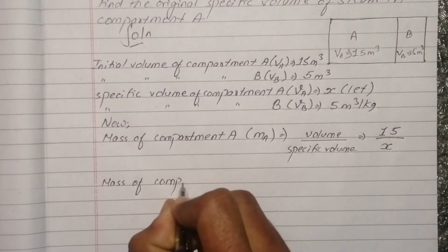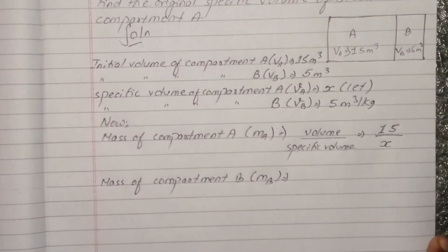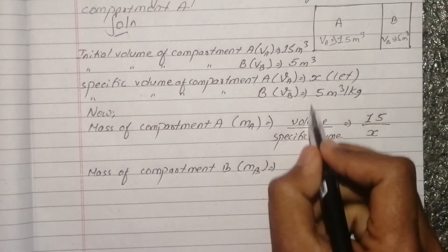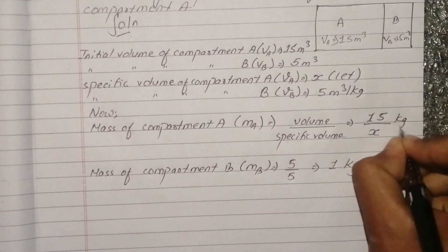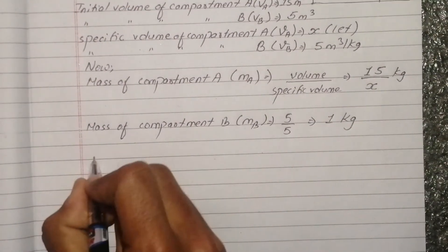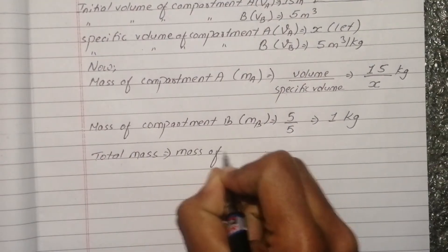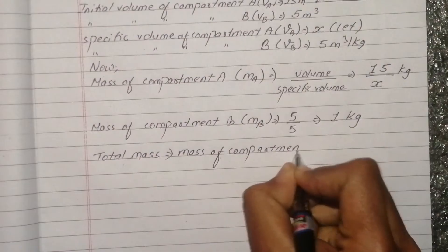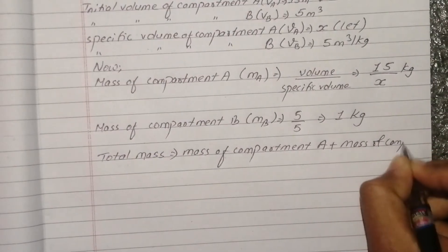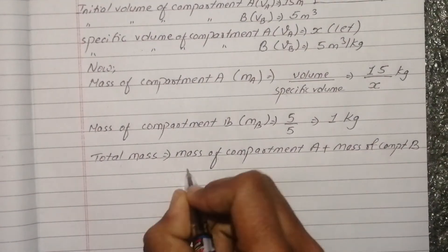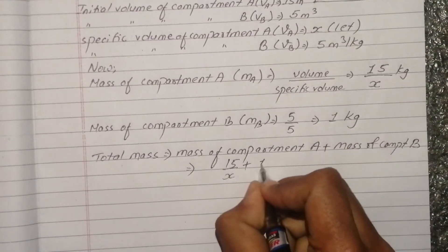Mass of compartment B: volume B divided by specific volume B — that is 5 divided by 5, which equals 1. Total mass equals mass of compartment A plus mass of compartment B. Mass of compartment B is 1 kg.